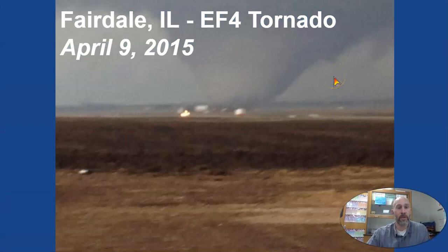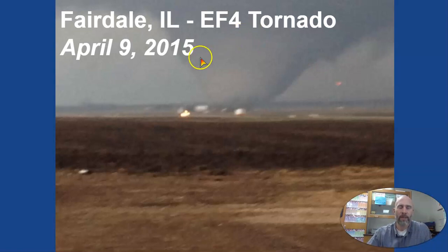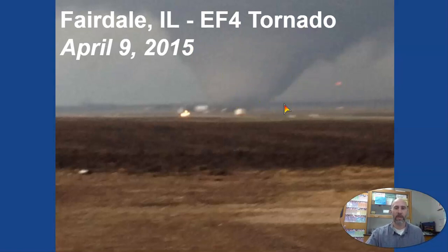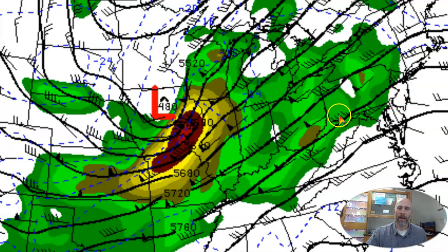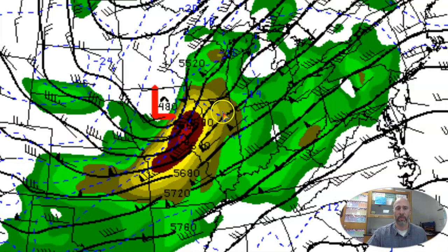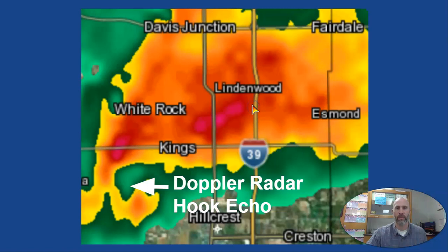This was an EF4 tornado — EF5 is the maximum — that happened in Fairdale, Illinois, just past NIU near DeKalb, in 2015. A family friend who lives on a farm there went out and took a picture of it; it killed some people. When it happened, I looked at the weather sites — here's the jet stream showing where the tornado occurred. Tornadoes usually happen underneath the jet stream because it pulls air upward, creating a chimney-type effect.